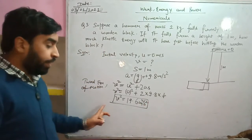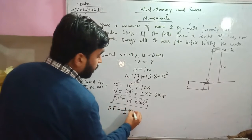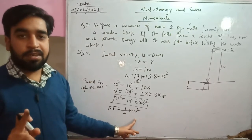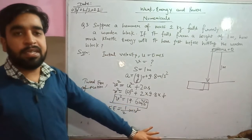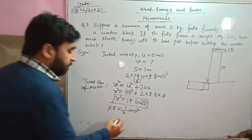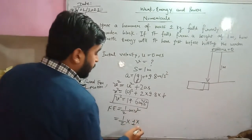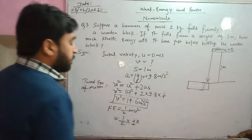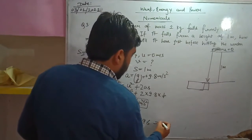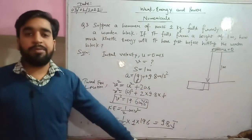For kinetic energy, KE = ½mv², we need v² not single v, so we substitute directly. Mass of hammer = 1 kg, v² = 19.6 m²/s². KE = ½ × 1 × 19.6 = 9.8 joules. So the kinetic energy of the hammer when it strikes the wooden surface is 9.8 joules.